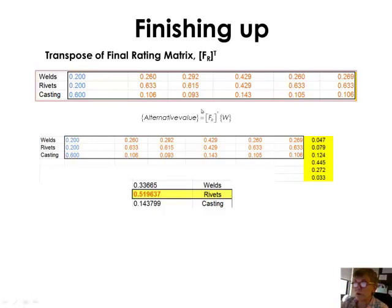And so there's the transpose. I took the final rating matrix, transposed it, and now I'm going to multiply it by these weights, which tell us the relative importance of those criteria that we had. When I do that, when I multiply this matrix by these weights, it tells me that riveting should be the best design for me, based on all of the criteria that we're looking at with durability kind of standing out above the other five and rivets as opposed to the welding design or the casting design would be our first choice.